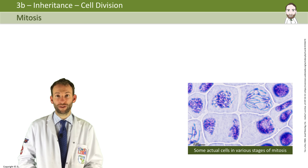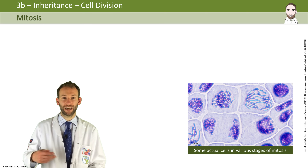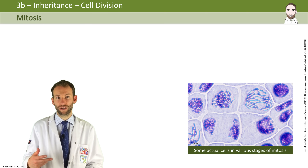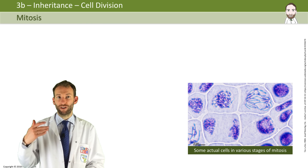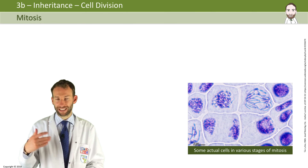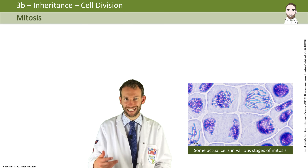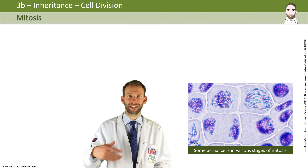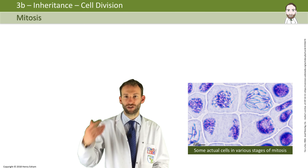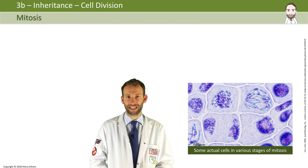Mitosis doesn't stop when you finish growing, because it occurs all the time to replace cells that we lose. It has to happen really fast while you're growing, but it also has to keep happening because you're losing cells all the time. You lose 40,000 skin cells a minute, and you replace your entire stomach lining every month. So you need to constantly do mitosis in order to keep regenerating cells.